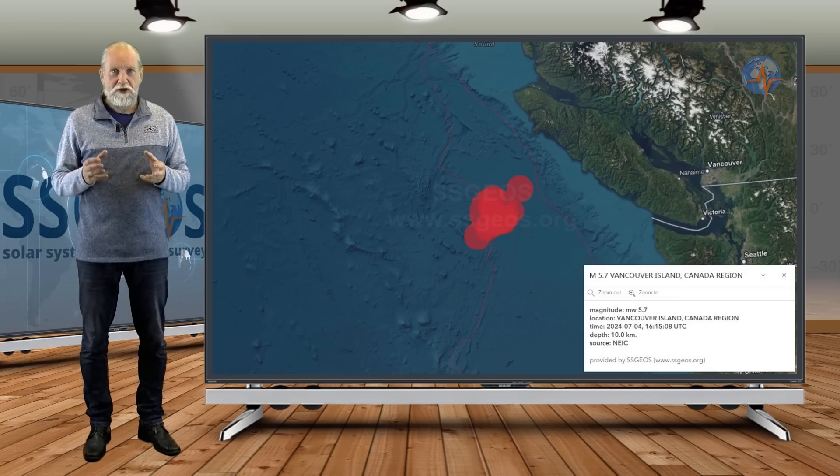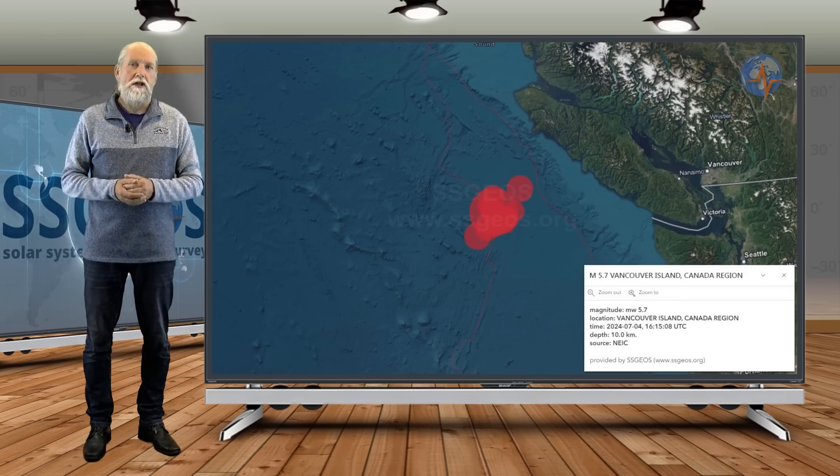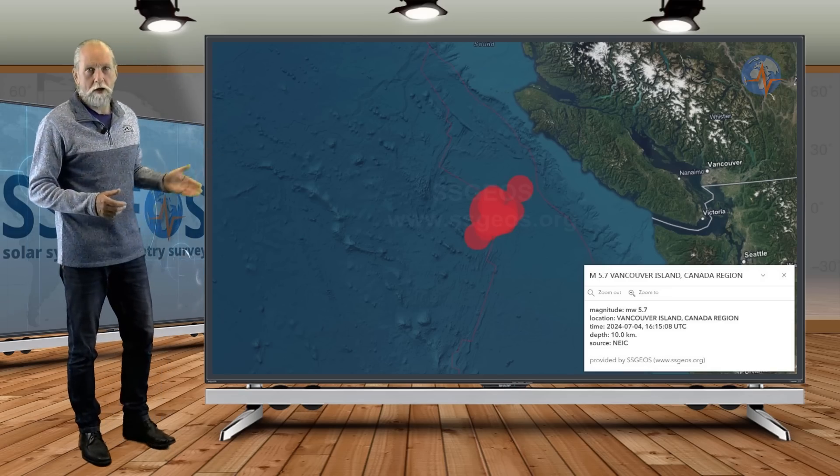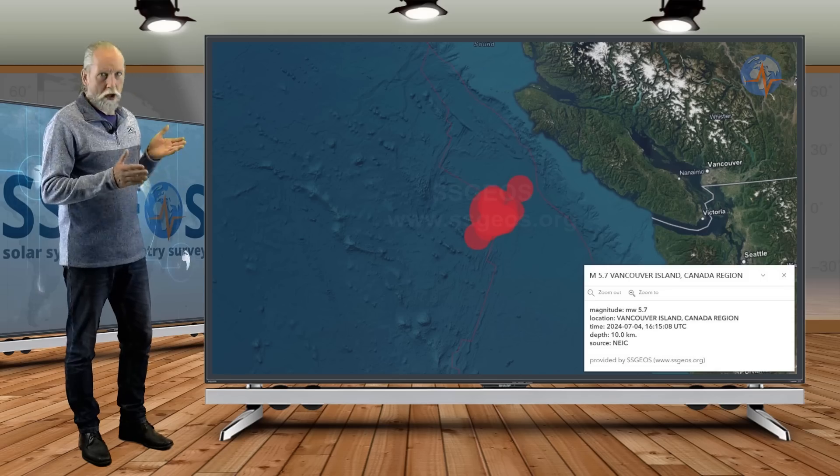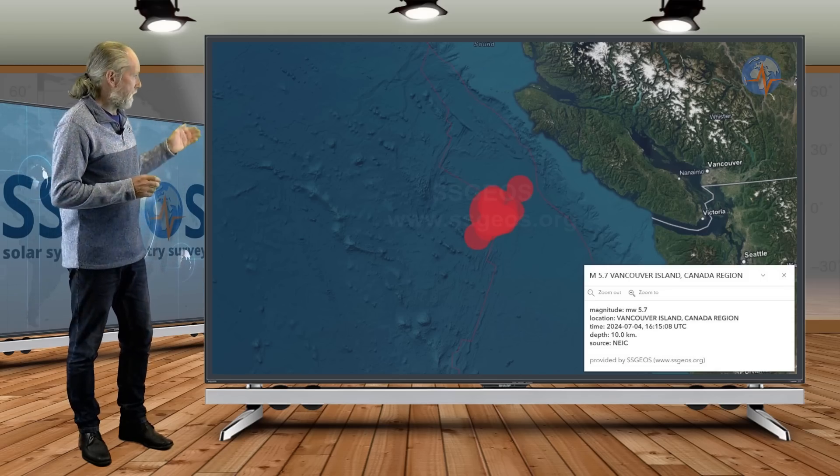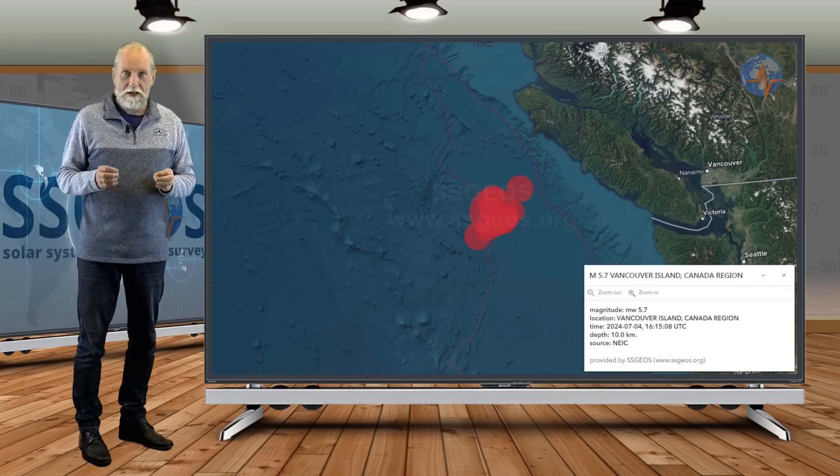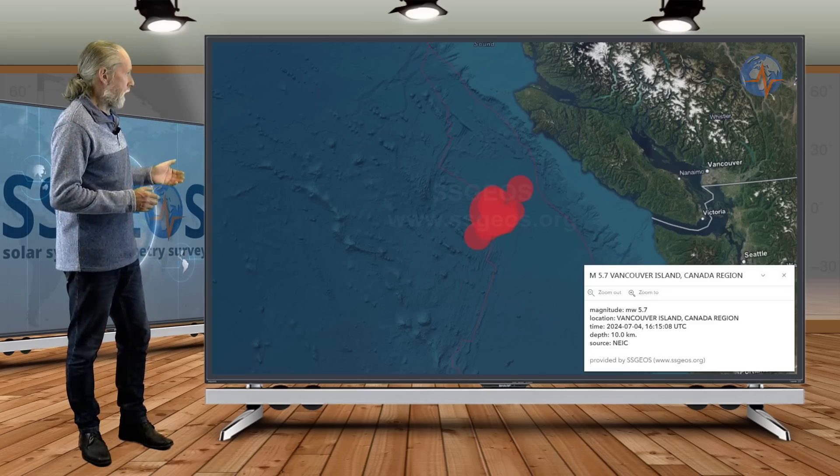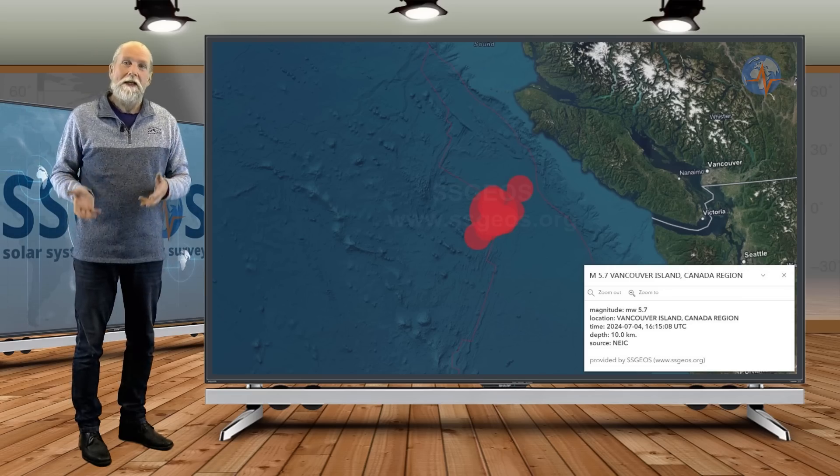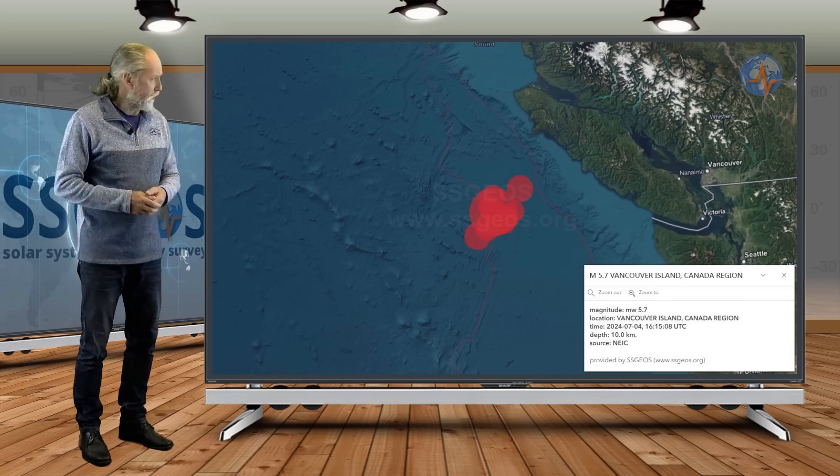There is obvious stress building along the Cascadia subduction zone. This is along the northern part, the Juan de Fuca plate, which is an old remnant of a plate that is diving under the North America plate. This clustering tells us that there is stress building along the Cascadia subduction zone. Again, only a 5.7. There could have been a single larger earthquake; instead we had a cluster.